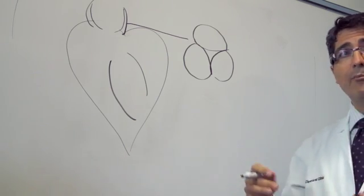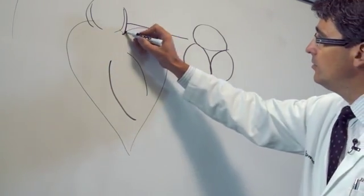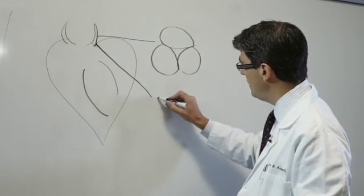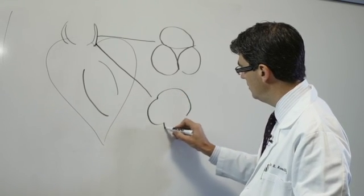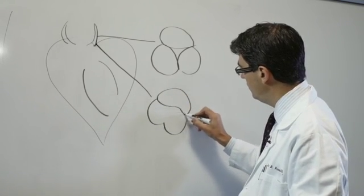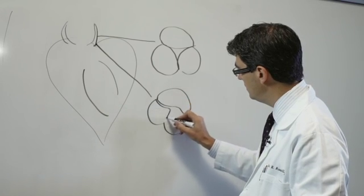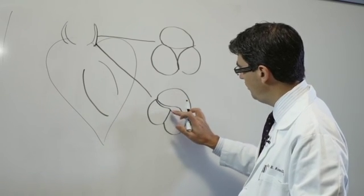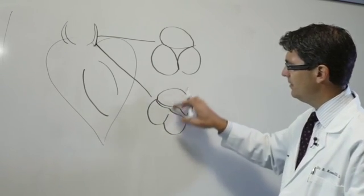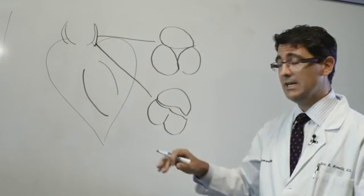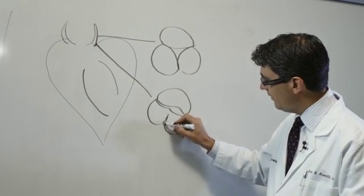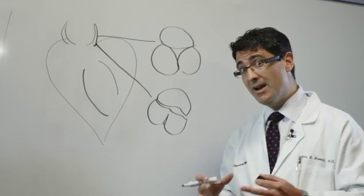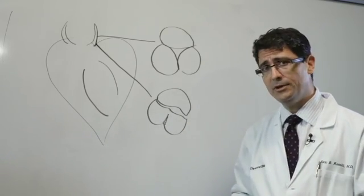But in folks who have a bicuspid aortic valve, we see that their aorta is shaped a little bit differently and they have two leaflets that open and close between the left ventricle and the aorta. A lot of times it looks like that valve was trying to be a three-leaflet valve in utero but never actually formed properly.